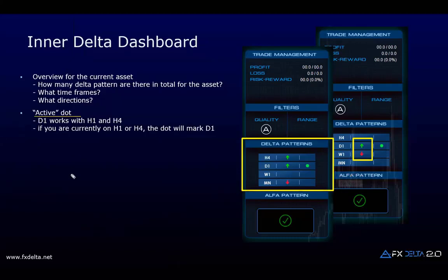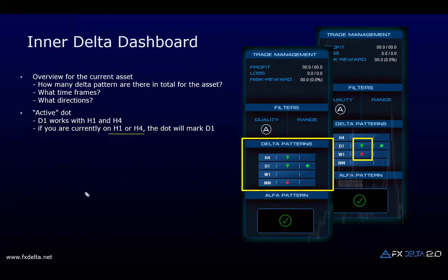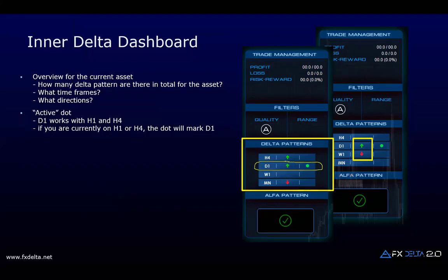Next is the active dot — a huge miss from Delta 1, and I'm sorry it wasn't there. Based on feedback, we managed to introduce it. Basically, the dot tells you the combination of timeframes you're working with. If you're working with a 4-hour and 1-hour chart combination — where you get the delta pattern and look for entries — and you're currently on the 1-hour or 4-hour chart, the dot will mark the daily chart, so you know what higher timeframe it's related to.